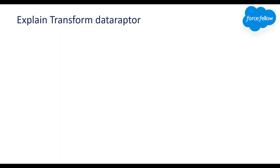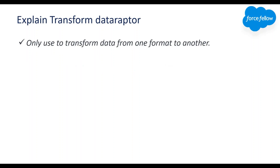Now let's discuss Transform Data Raptor. This is a special kind of Data Raptor which doesn't deal with Salesforce database operations — it is not used to communicate with the Salesforce database. It is only used to transform data from one format to another. For example, let's say you have a JSON object which has data of both Account and Contact objects, and you want two different objects for Account and Contact details. Then we can use Transform Data Raptor.